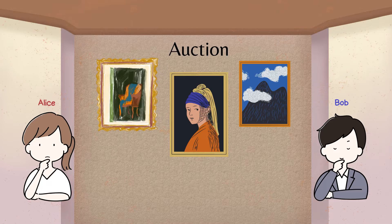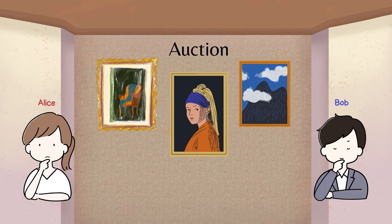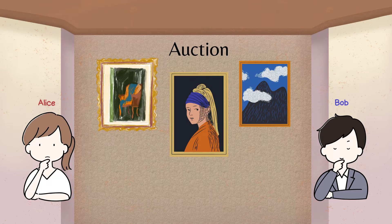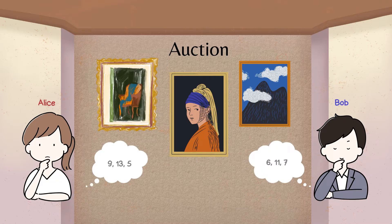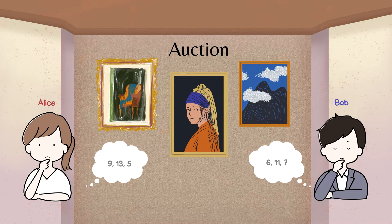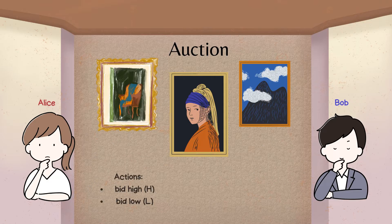Imagine an auction where two bidders, Alice and Bob, are bidding for three paintings. Each bidder knows their own valuation of the paintings but does not know the other's valuation. For simplicity, there are two possible actions they can take: bid high or bid low.